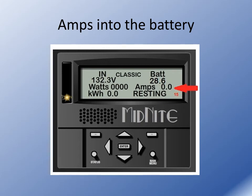This is showing instantaneous amps into the batteries, so at any given time, if your solar system or wind turbine — whatever it is — is charging, this number is indicative of how much current the Classic is actually pushing into the batteries at that given time.